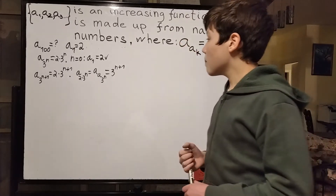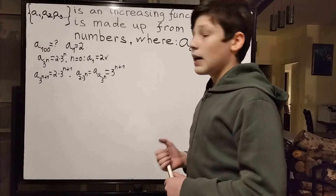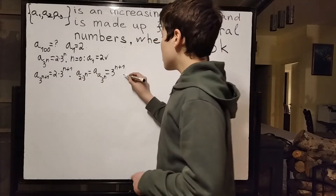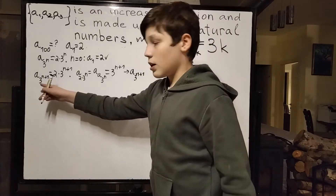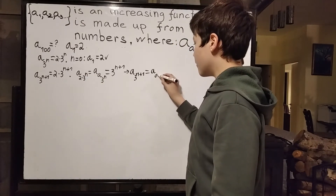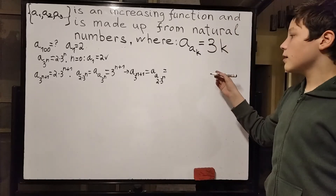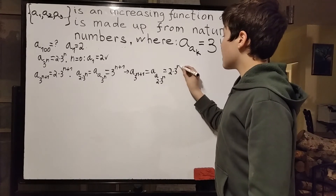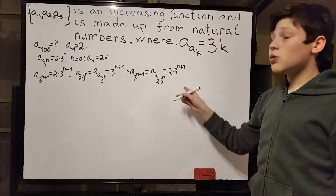Now, all we really have to do is apply a to each side again to get that a of 3 to the n plus 1, which is what we want to find, equals a of a of 2 times 3 to the n, which by our rule is 3 times 2 times 3 to the n, giving us 2 times 3 to the n plus 1. And that is exactly what we wanted to get. A of 3 to the n plus 1 is equal to 2 times 3 to the n plus 1.